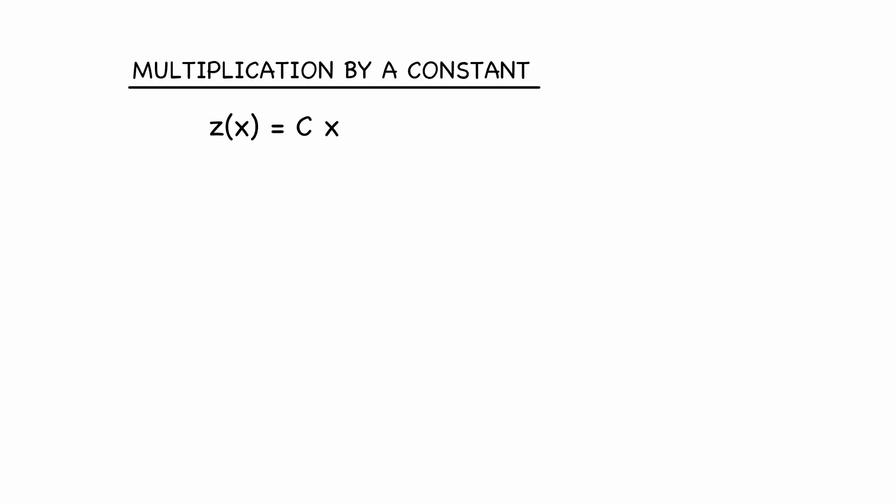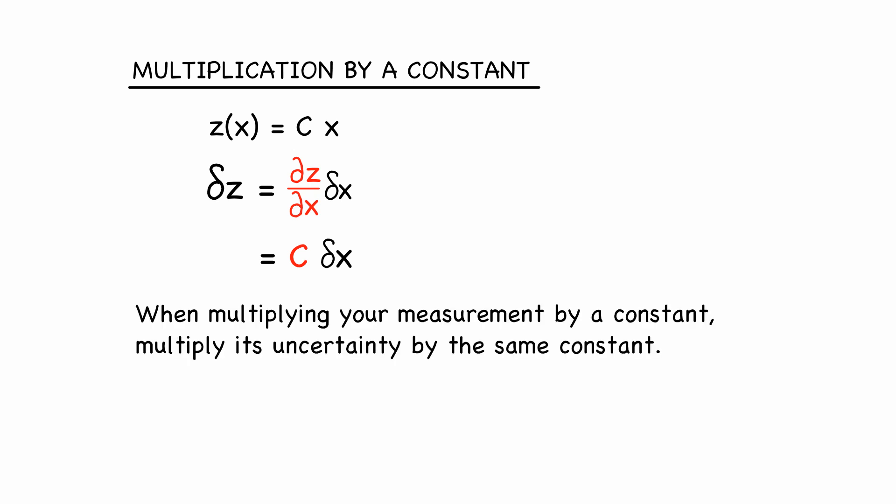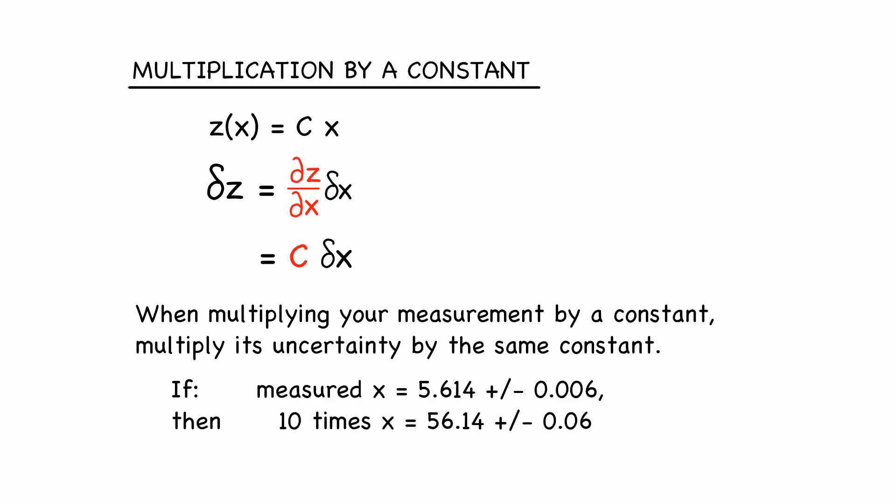Multiplication by a constant. When z is just a constant c times a measurement x, the derivative of z with respect to x is simply c. Therefore, the uncertainty on z is c times the uncertainty on x. So when you multiply a measurement x by a constant, you multiply its uncertainty delta-x by that same constant.